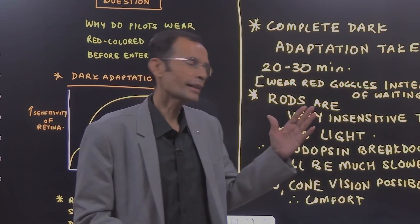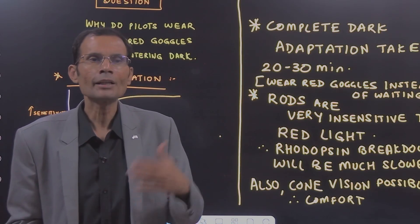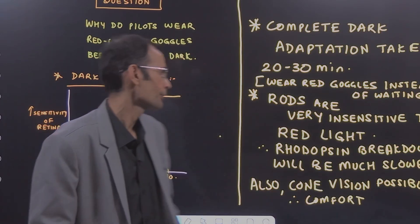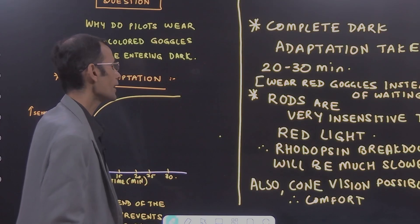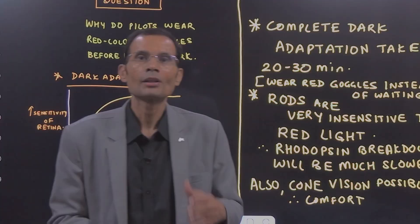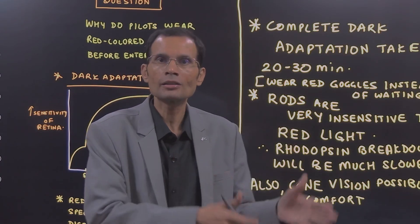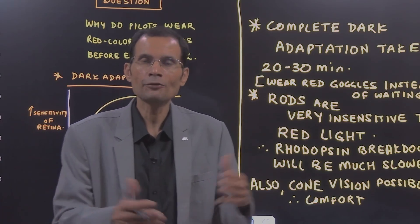Number two, in the red coloured goggles, the sensitivity will improve little faster and third reason is that cone vision will also be possible if you are wearing the coloured glass and red coloured glass. You know colours, cones are for the colour vision.